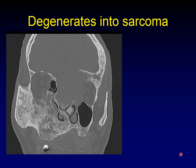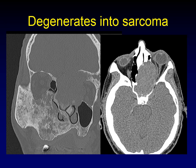One of the problems with fibrous dysplasia is that it can de-differentiate into sarcoma, either osteosarcoma or chondrosarcoma. You can see fibrous dysplasia all through the mid-face, but what's concerning are these erosive areas where the cortex just dead-ends into an erosive mass. This is uncharacteristic of fibrous dysplasia itself, and when you see an aggressive mass in the setting of fibrous dysplasia, you need to become concerned about degeneration into sarcoma.